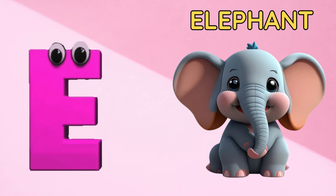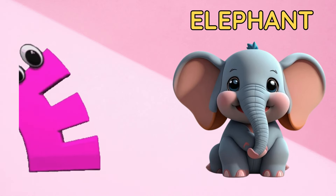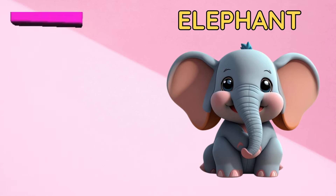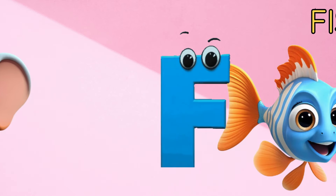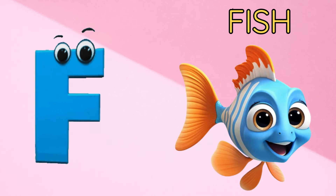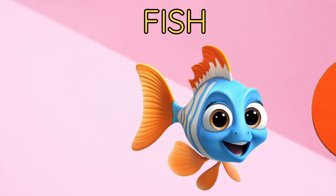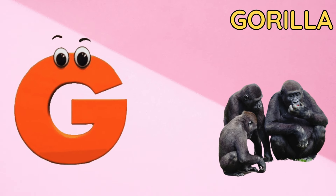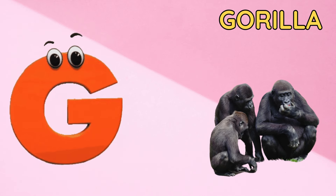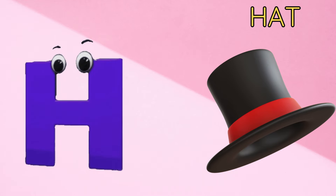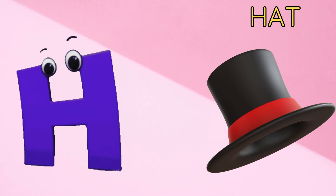E is for elephant, e-e-elephant. F is for fish, f-f-fish. G is for gorilla, g-g-gorilla. H is for hat, h-h-hat.